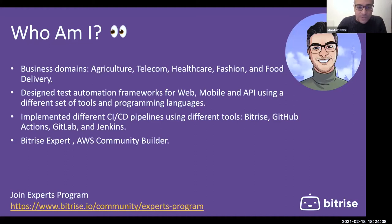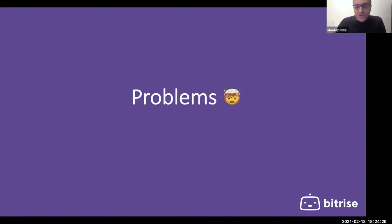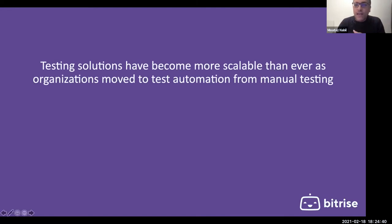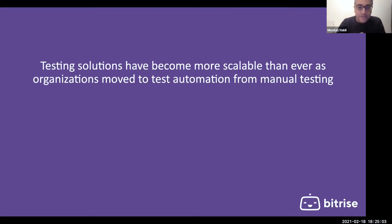You can also join the Bitrise Expert program by sharing any story, video, or anything you did with Bitrise. I'll start with the problems. We mainly have two problems here. Organizations are moving to test automation from manual testing, and most organizations are now talking about scaling — scaling infrastructure, scaling the business, and scaling test automation solutions. You want to cover end-to-end solutions for critical business test cases. Manual testing takes a lot of time and effort from test engineers, so we need solutions for test automation.